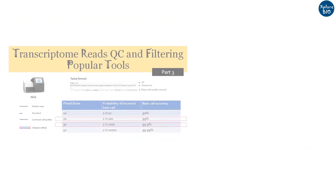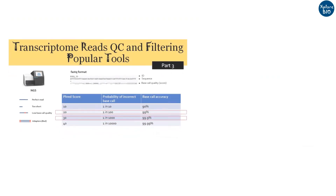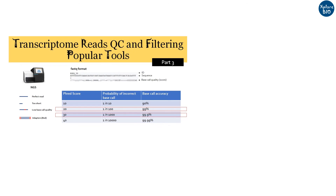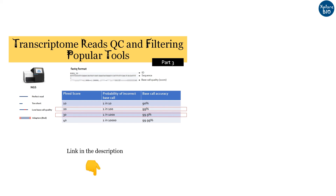If the bases are of poor quality, the sequence needs to be filtered out in subsequent steps before proceeding to downstream analysis such as assembly and mapping. If you want to learn how quality filtering is done, watch my video which is given in the description below.